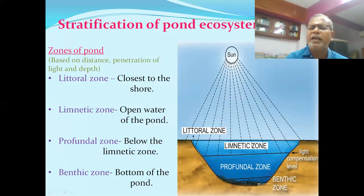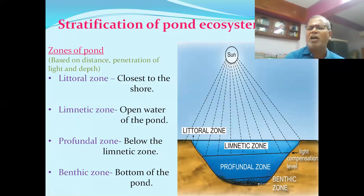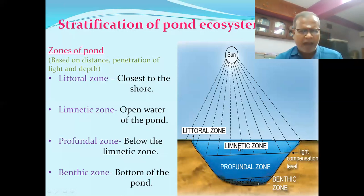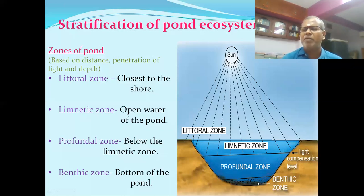In the littoral zone and limnetic zone, the primary producers include amphibious hydrophytes and rooted plants. The limnetic zone is enriched with phytoplankton, while the profundal zone is enriched with consumers.